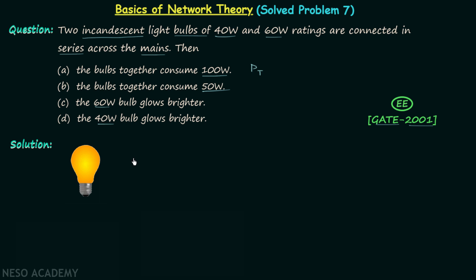When we buy any bulb from the market, there are values written on it known as rated values. Usually the rated power, rated voltage, and rated frequency are mentioned on the bulb. The rated values are those values at which we can have the maximum efficiency of the bulb. We can provide values more than the rated values, but in that scenario the efficiency of the device will not be maximum.